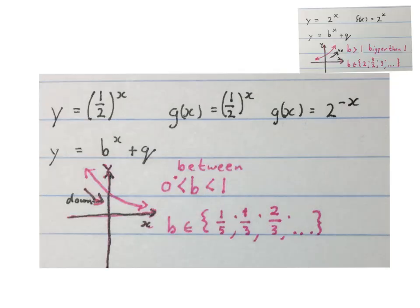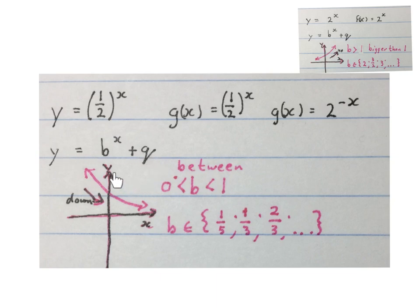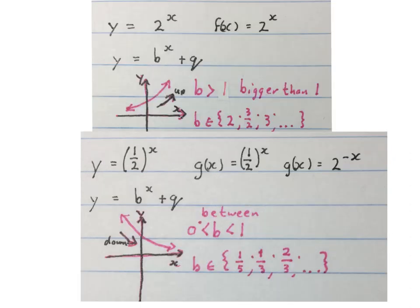Next we have exponential equations with a little x in the air and a base that is a fraction less than 1. You can write it in multiple equivalent forms — you better know your negative exponents. If the base is between 0 and 1 — a fraction where the top number is smaller than the bottom — then the graph will be going down from left to right. Please stop the video and make sure you understand when the graph goes up from left to right and when it goes down.